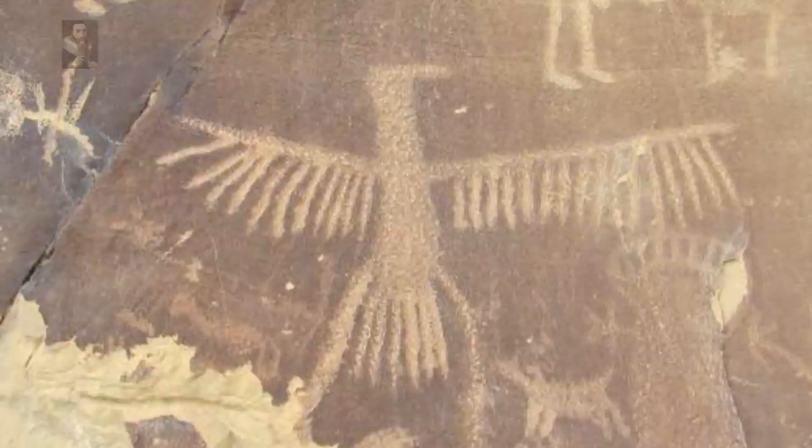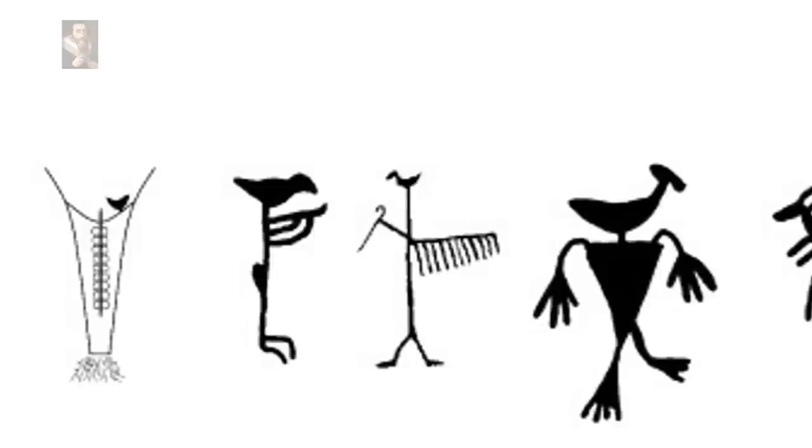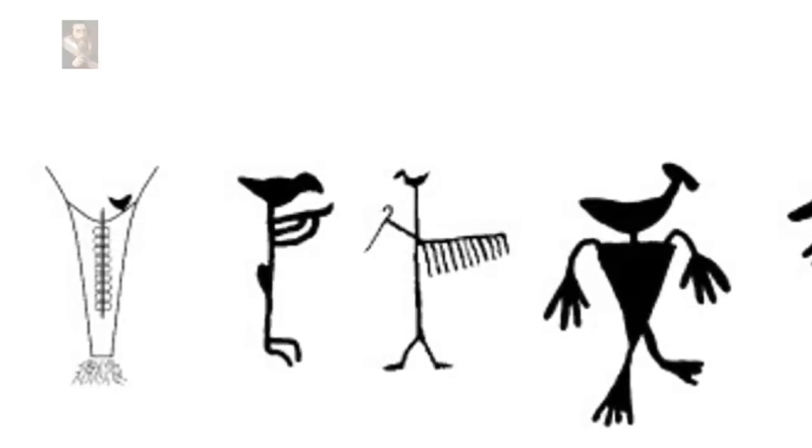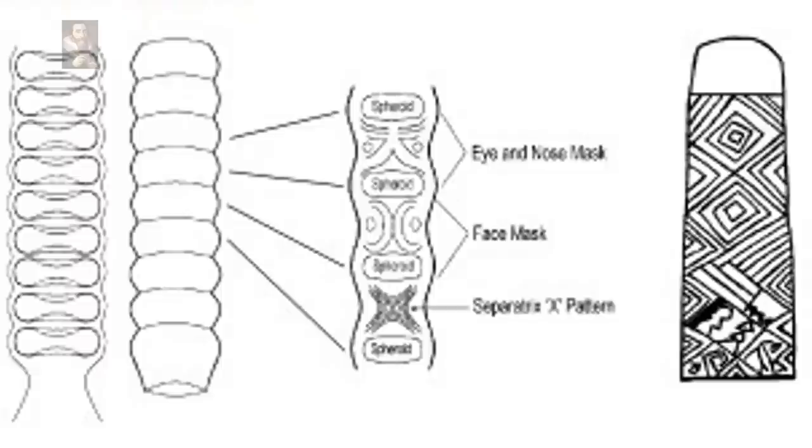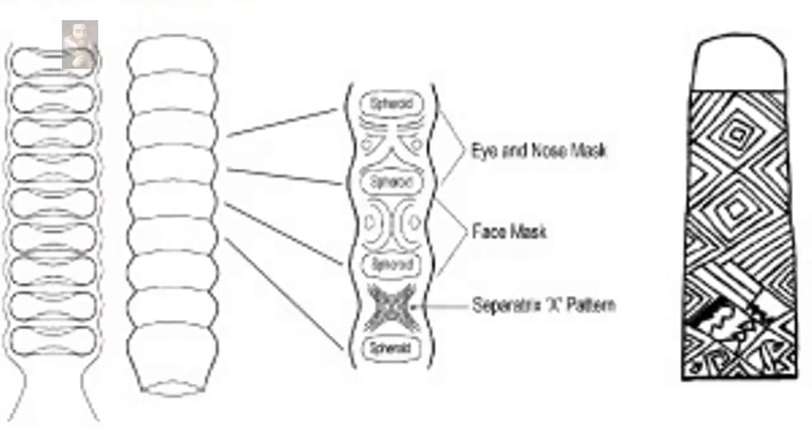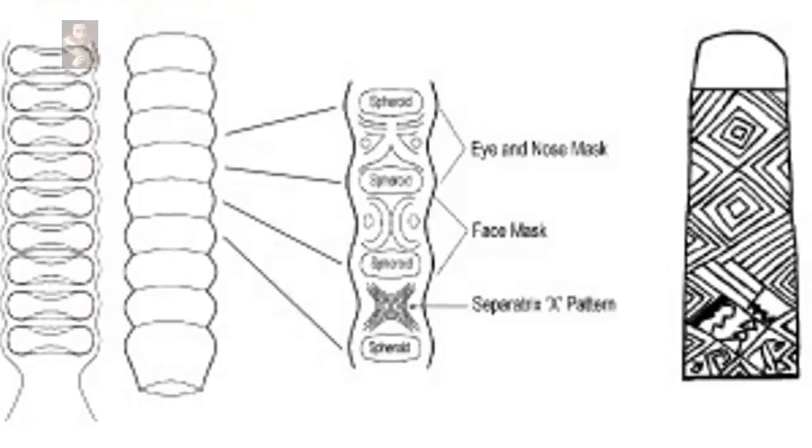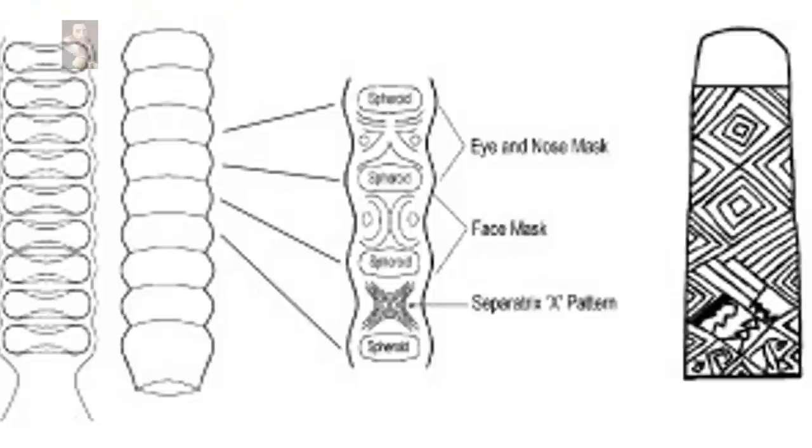They are portrayed at all stages of the high-energy aurora with many different forms having been recorded in ancient rock art. Several distinct forms would be noticeable. For example, eye and nose masks are the result of small side eye circles above an oval-shaped nose.